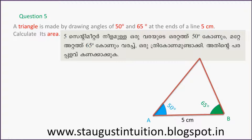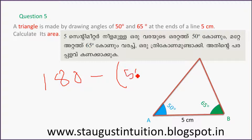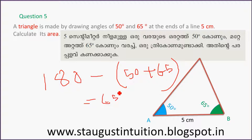According to the angle sum property, angles in a triangle add up to 180 degrees. So 50 plus 65 gives us 115 degrees, meaning the third angle C is equal to 65 degrees.